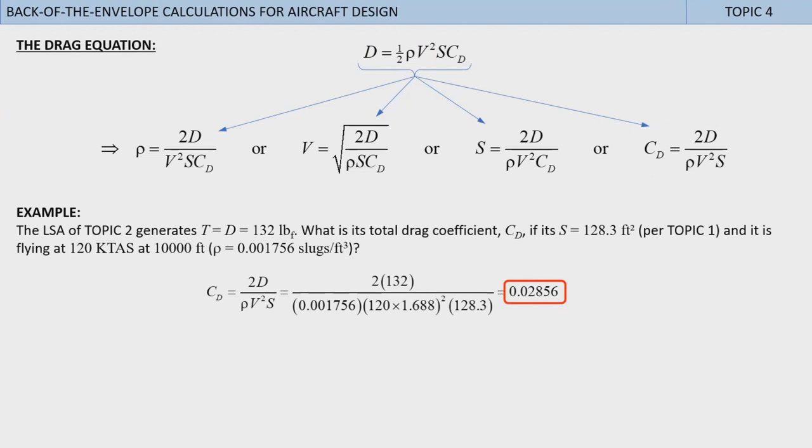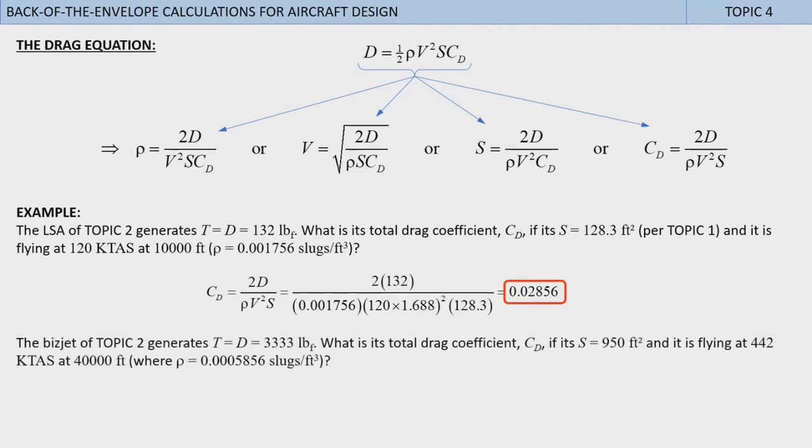We select the last equation of the 4 and plug and chug to find that CD equals 0.02856, or about 286 drag counts. Let's repeat this for the business jet of topic 2. It generates thrust equals 3,333 pounds. What is its total drag coefficient CD if its S equals 950 square feet, and it is flying at 442 kTAS at 40,000 feet, where ρ equals 0.0005856 slugs per cubic foot? Repeating the process returns some 215 drag counts. Now let's go to topic 5.